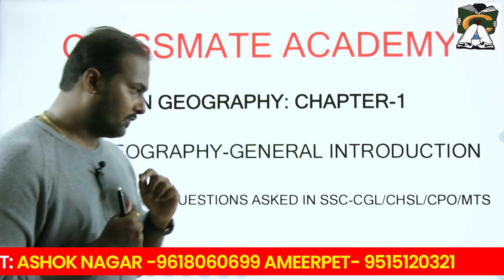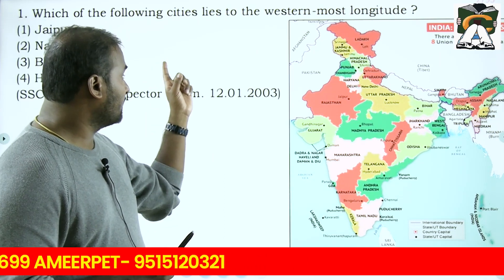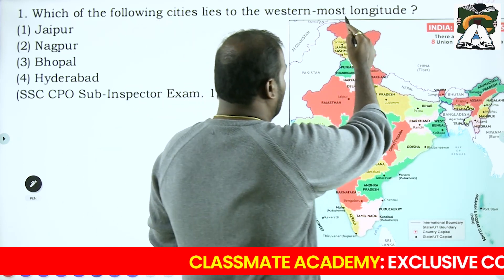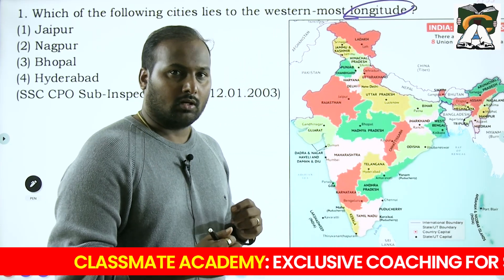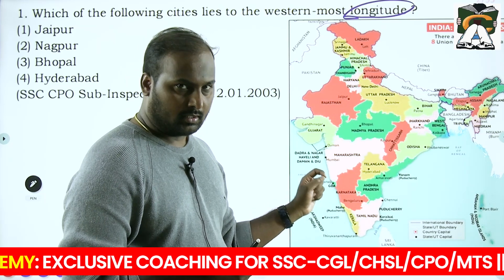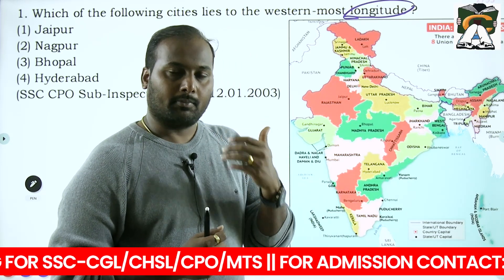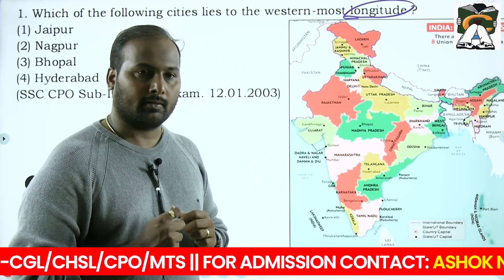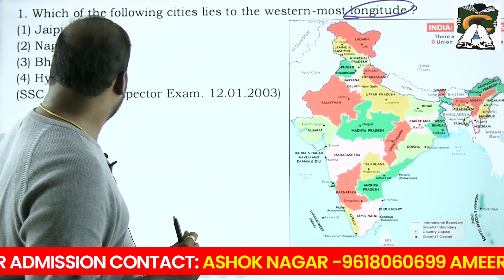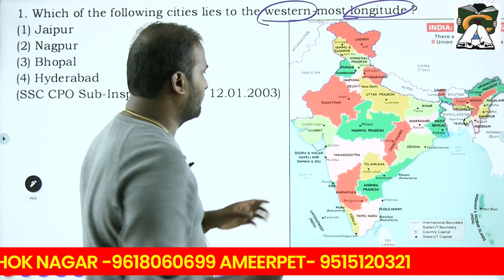Let's start with the first question in Chapter 1 of Indian Geography: 'Which of the following cities lies on the westernmost longitude?' We know that longitude lines pass from north to south - they are imaginary lines. Looking at the Indian map, the options are Jaipur, Nagpur, Bhopal and Hyderabad. She is asking the westernmost, so westernmost means the furthest to the left.